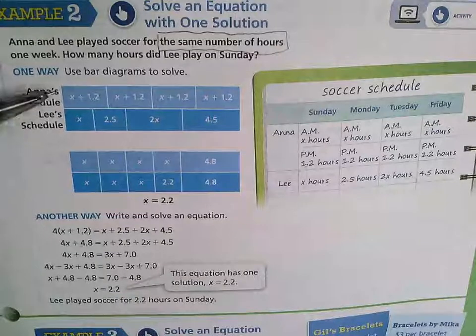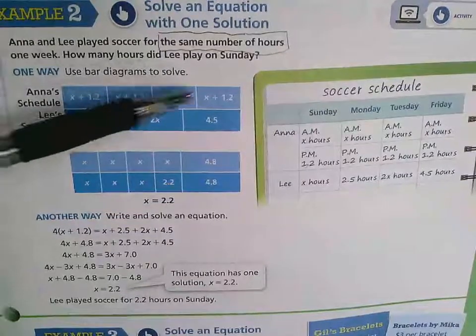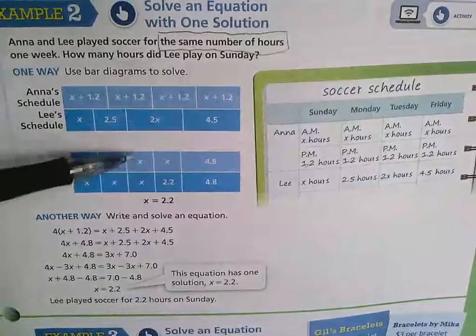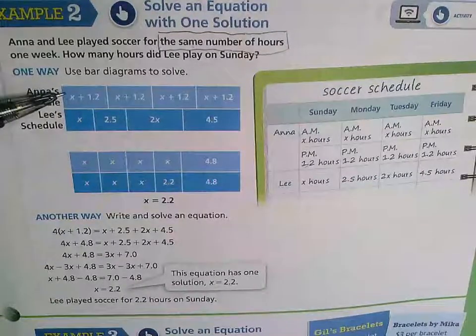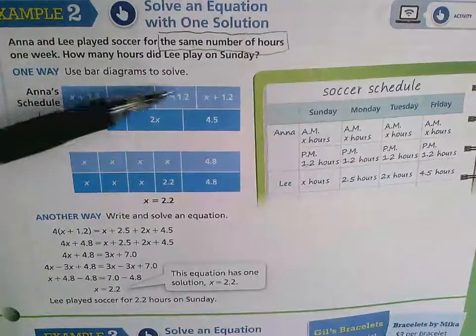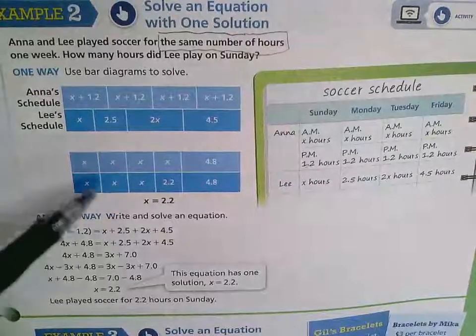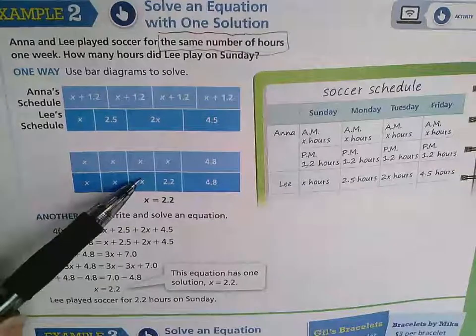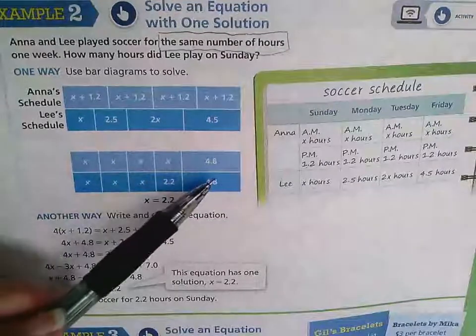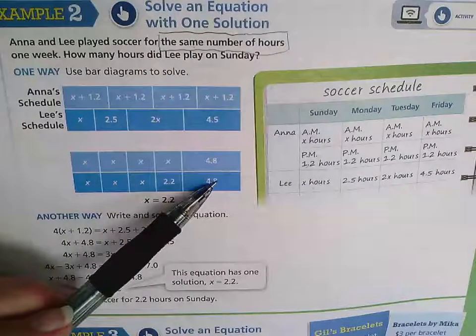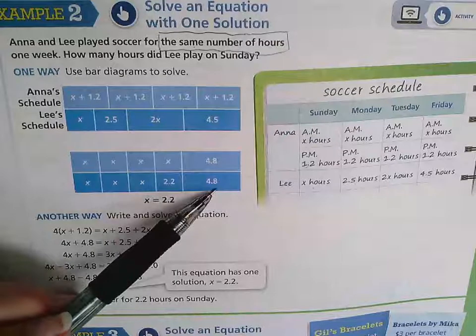So then what they did down here, you'll notice is that they took and combined like terms. So they put the four X's for Anna, and then they combined the constants to get the 4.8. And with Lee, they did the same thing. And his constants combined to get 4.8 as well.